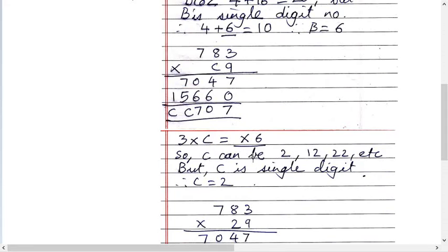Now C can be 12, 22, etc. No. Why? Because if C is 12 then it will be a 3 digit number. This will be a 3 digit number which is not given.